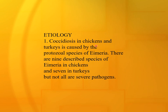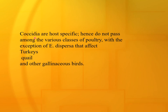Etiology: Coccidiosis in the chicken and turkey is caused by protozoal species of Eimeria. There are nine described species of Eimeria in the chicken and seven in the turkey, but not all are severely pathogenic. Coccidia are host-specific and do not pass among the various classes of poultry, with the exception of Eimeria dispersa, which affects turkey, quail, and other gallinaceous birds.